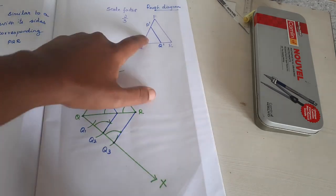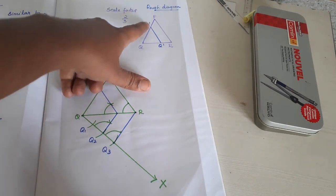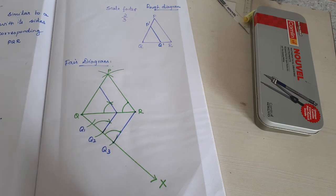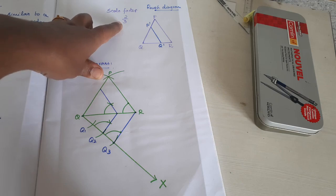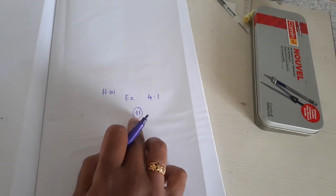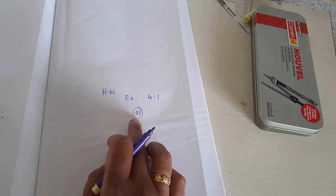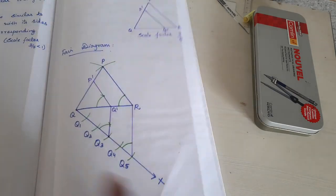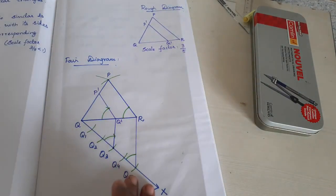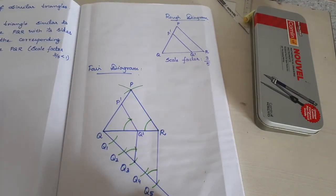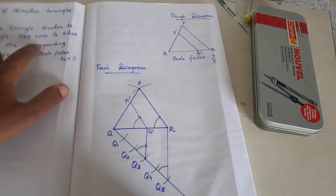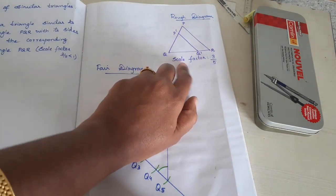For all similar triangle problems, the measurements for arc spacing and acute angle are approximate — only the number of arcs and the joining arc number are exact, based on the scale factor. The rough diagram should match whether it is a proper or improper fraction: proper fraction means dash symbols come inside; improper fraction means they come outside. In the next class, we will learn how to draw similar triangles for improper fractions.